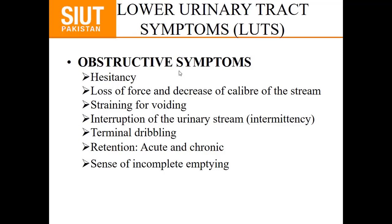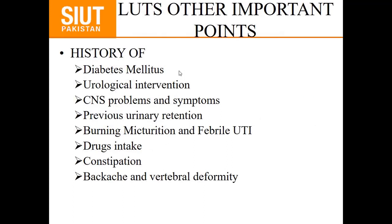When a patient presents with lower urinary tract symptoms, we must ask about history of diabetes mellitus for any neuropathic cause, any previous urologic intervention, CNS problems and symptoms to rule out a neurogenic bladder, previous history of urinary retention and catheterization, history of burning micturition and febrile urinary tract infections, drug history, history of constipation, and history of any vertebral deformity.